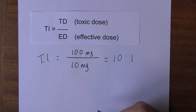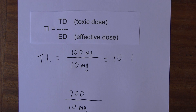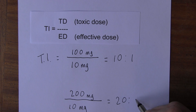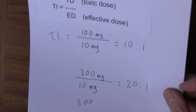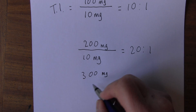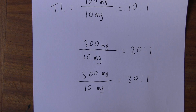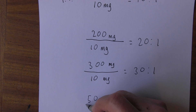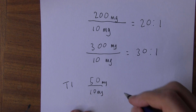Suppose a drug has an effective dose of 10 milligrams and a toxicity dose of 200 milligrams — that gives us a 20 to 1 ratio, so that drug is going to be safer. Or if the toxic dose is 300 milligrams with an effective dose still of 10 milligrams, it's 30 to 1 — even safer. But if the toxic dose is only 50 milligrams with an effective dose of 10 milligrams, then it's 5 to 1 — that drug is more potentially toxic and we have to be more careful.